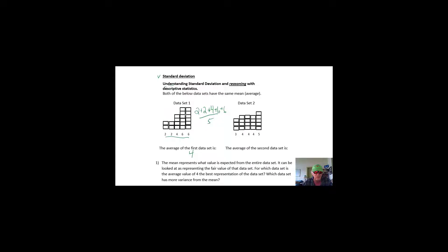These are visual representations of the two data sets. The mean represents the value expected from the entire data set — it can be thought of as the fair value. So 4 is the fair value for both data set 1 and data set 2. For which data set is the average of 4 the best representation? The answer is data set 2.